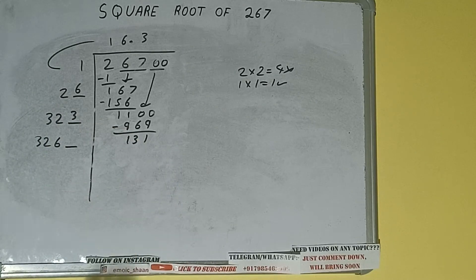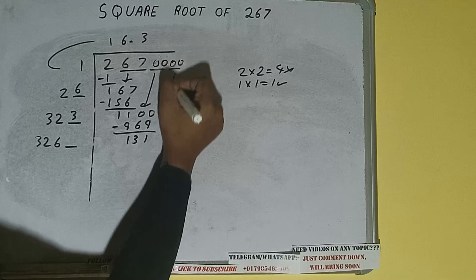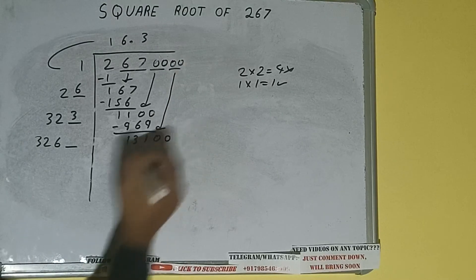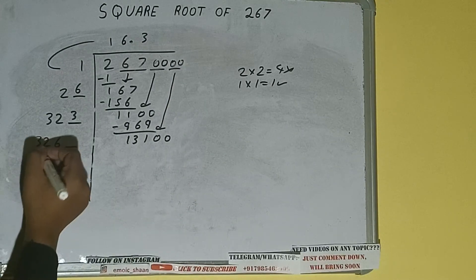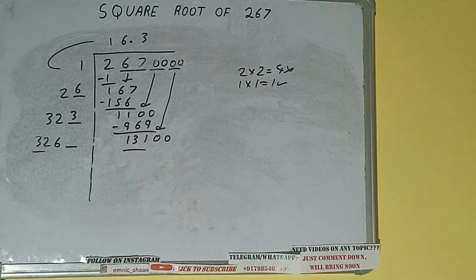This number we need to make big, so bring the next pair of zeros down and it will be 13100. Now compare this 32 with this 131.